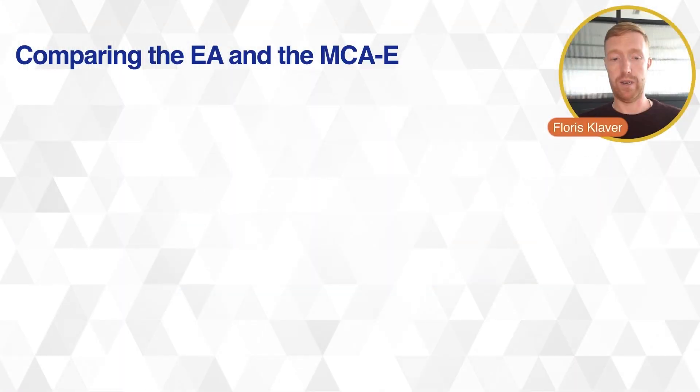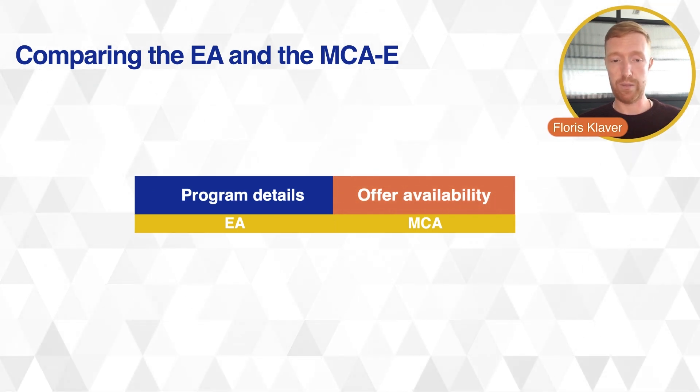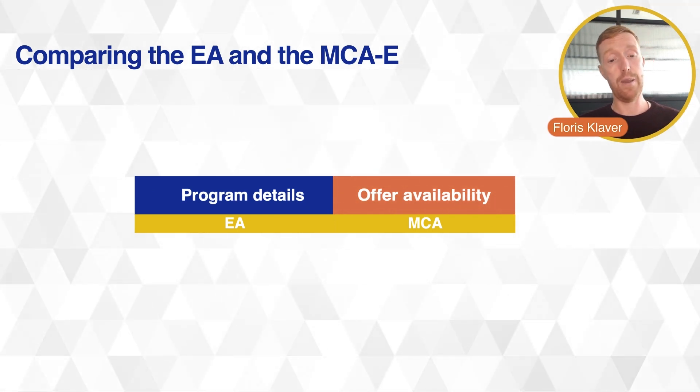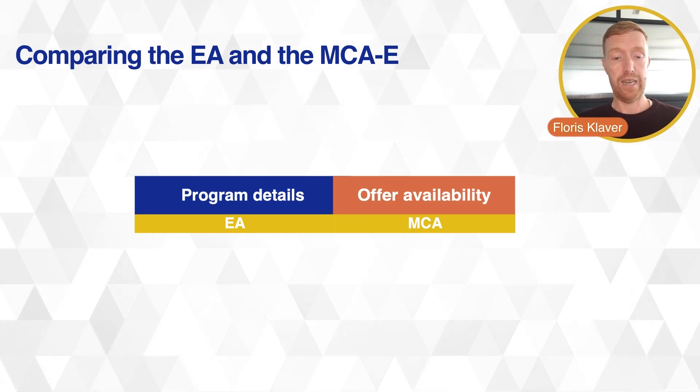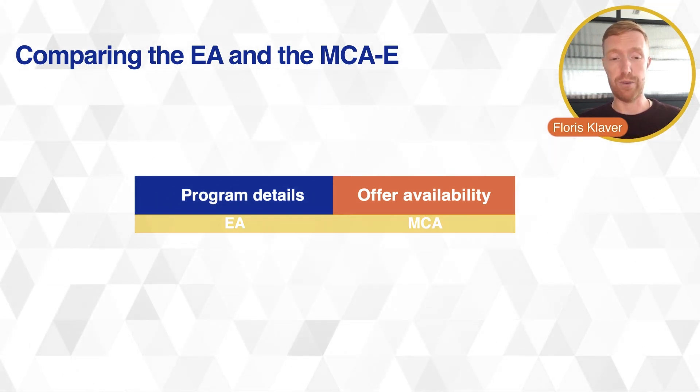In this table I want to go through how the EA and MCAE compare to each other. This is a long overview and we go through it one by one. We have two main topics to cover: offer availability — what's available within the MCAE versus the EA — and the program details, so what is possible and what isn't possible.